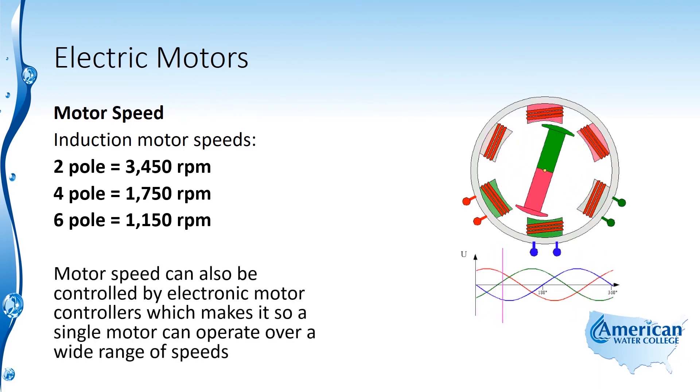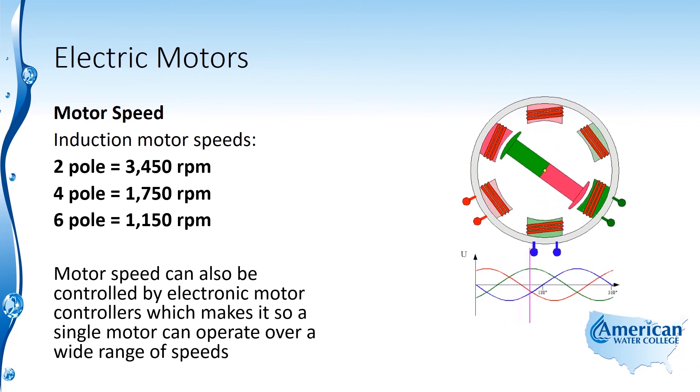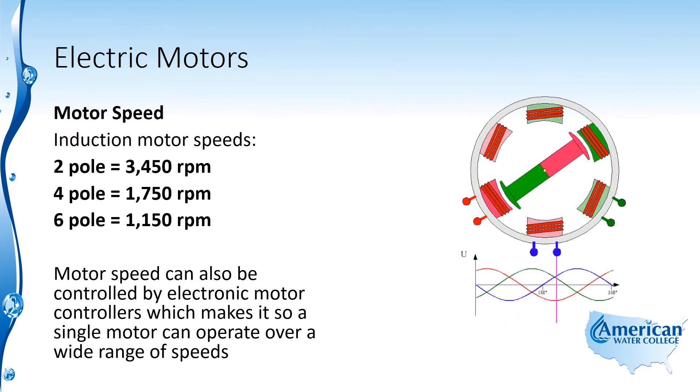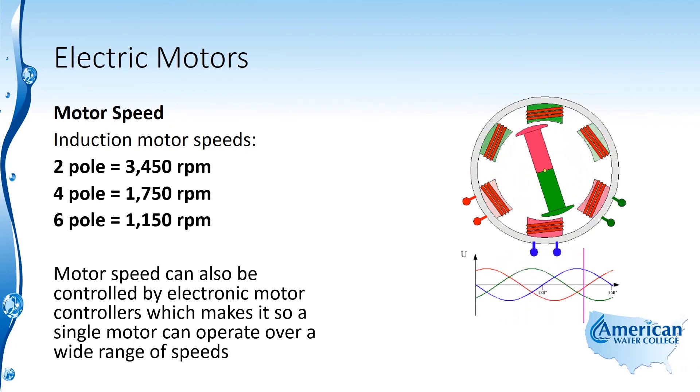Motor speed can also be controlled by electronic motor controllers, which allow a single motor to operate over a wide range of speeds.